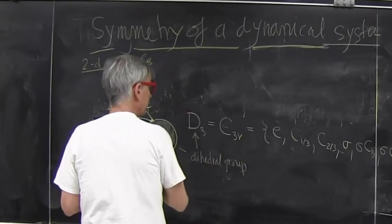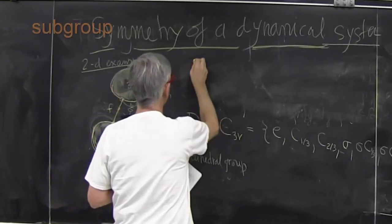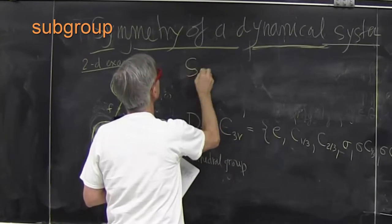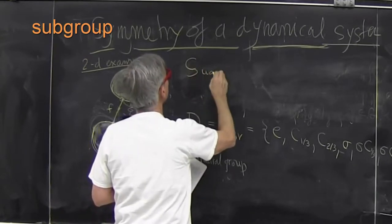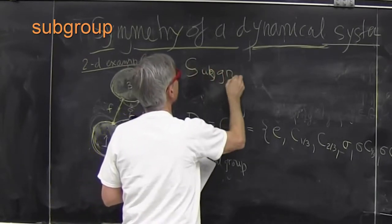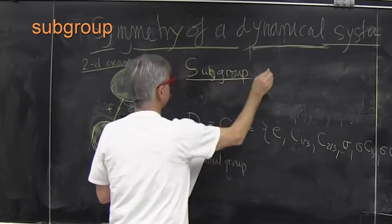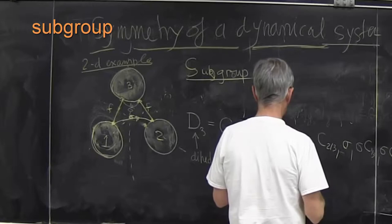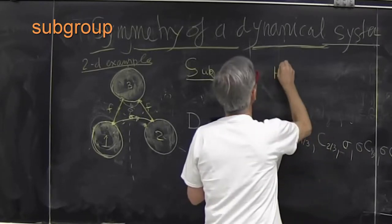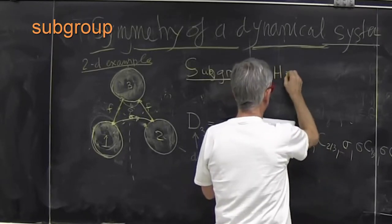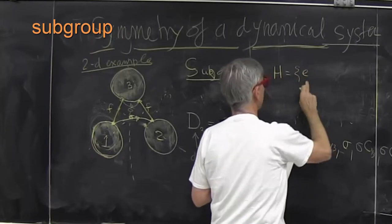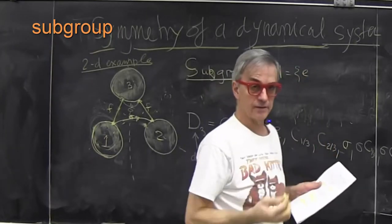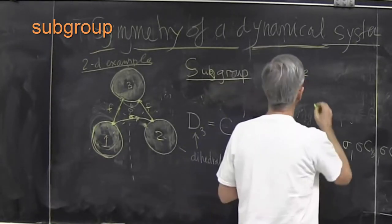One thing that's immensely useful and very important for us is the notion of subgroup. It's a subset of elements of the group. It has to always have identity in it, otherwise it's not a group thing without identity.